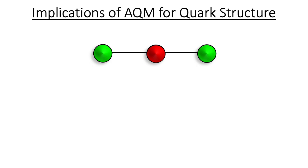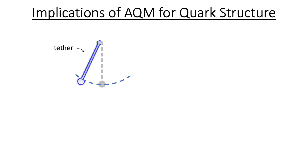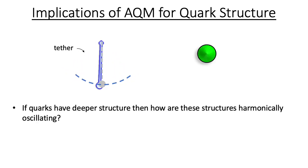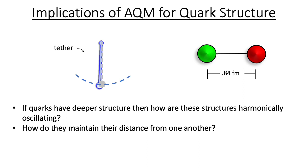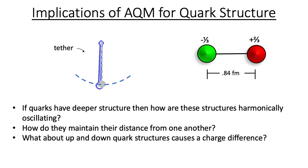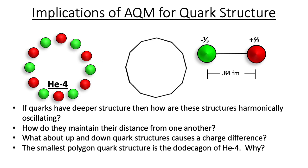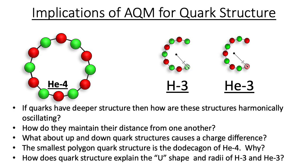The various parameters and constraints of the alternating quark model have implications for the structure of the quark. Though nonlinear dynamics helps to rationalize average quark positions, serious questions remain: what forces are at play within a single quark, and if quarks are point charges, how do they maintain their distance? What difference in structure gives up and down quarks their unique charge? What is the role of quark structure in determining how much a sequence of quarks can bend? And what about the quark structure causes hydrogen-3 and helium-3 to assume their unique U shape? The answers to these questions depend on a deeper structure for quarks.